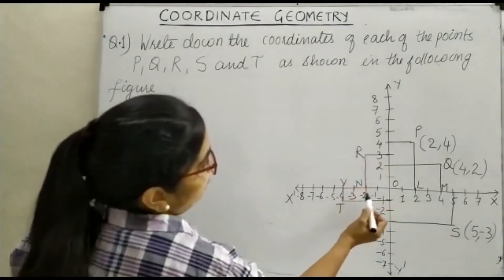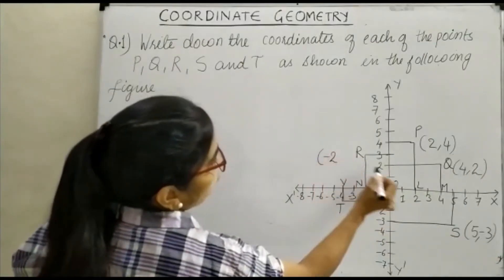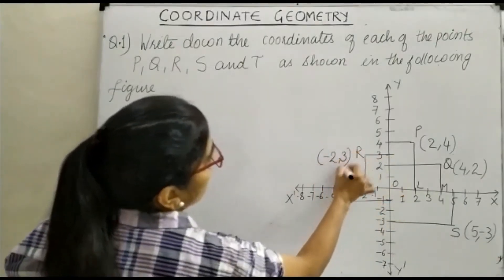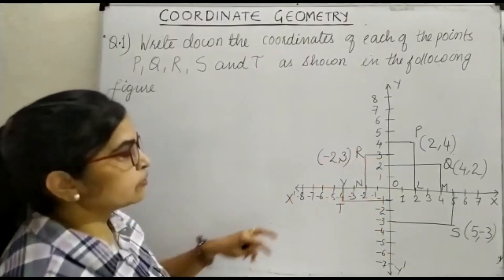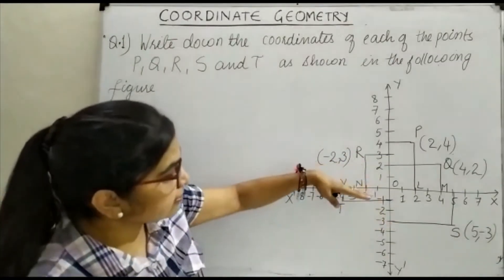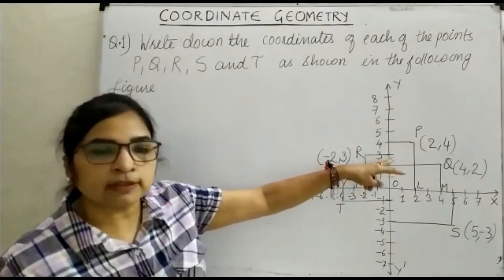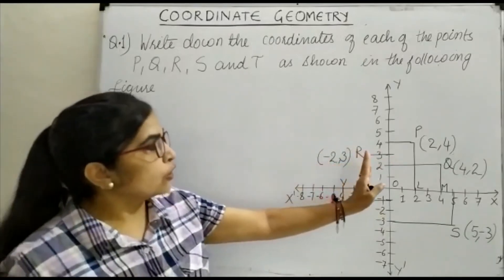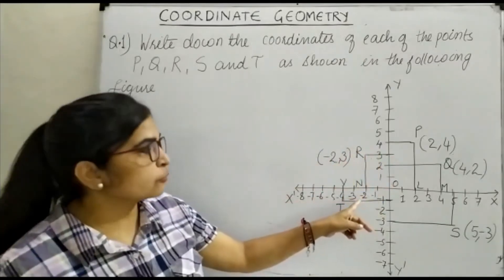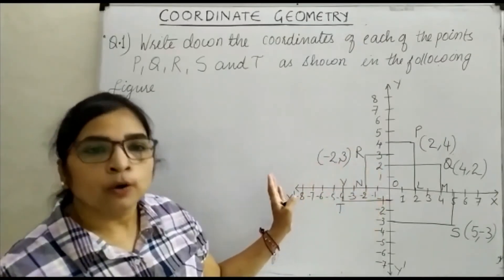Now coming to point R, the x-coordinate is minus 2 and the y-coordinate is minus 1.